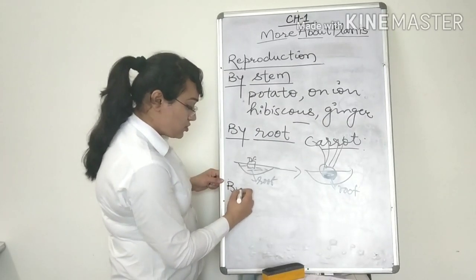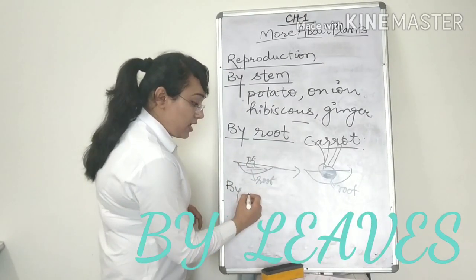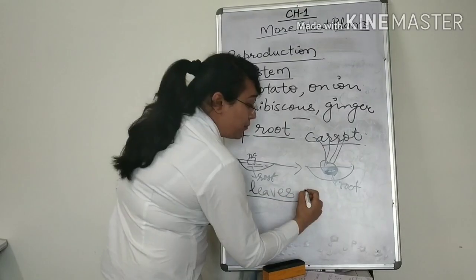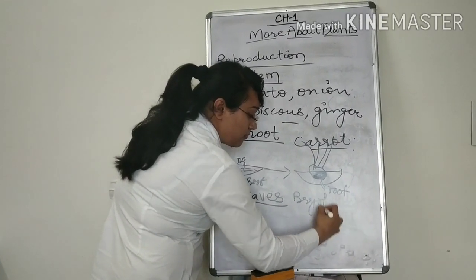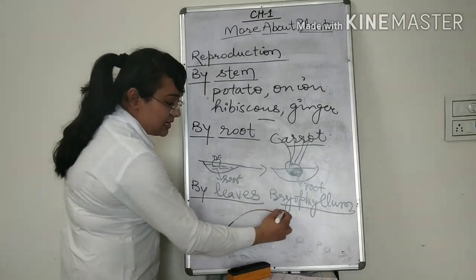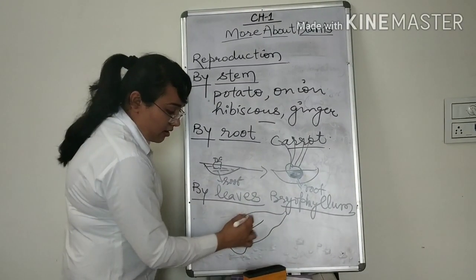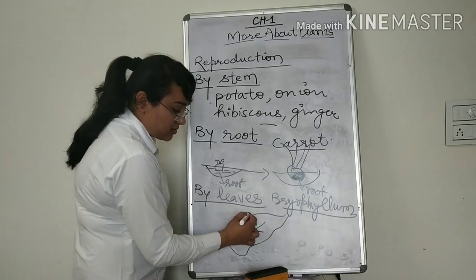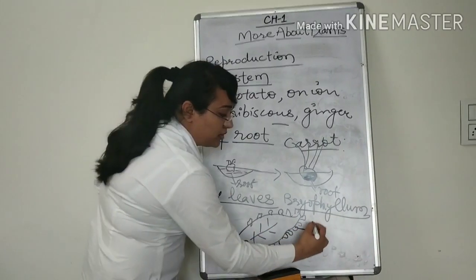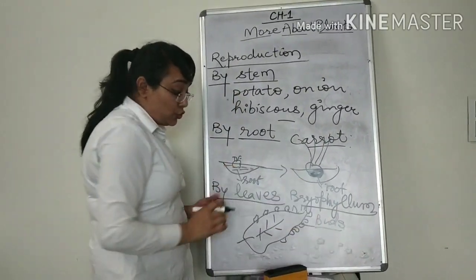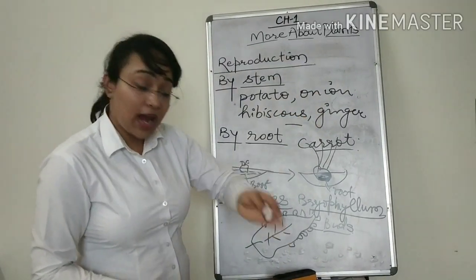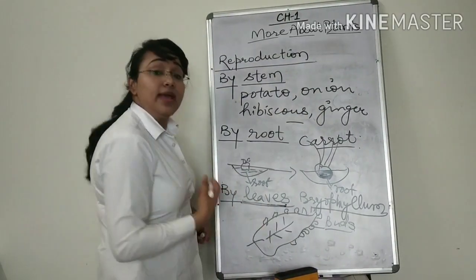Now, this is by stem and by root. Now there are certain plants which are produced by leaves. Yes, if you have ever seen bryophyllum. Now this bryophyllum is a leaf. The leaf of this bryophyllum has small buds around the edges of its leaf. Yes, there are small buds around the edges of this leaf. Using these buds, we can grow it into the soil and we can reproduce more and more plants of the same kind. This happens by leaves.